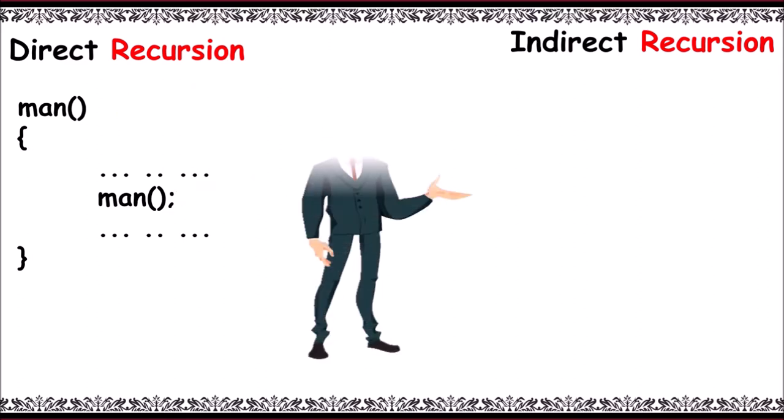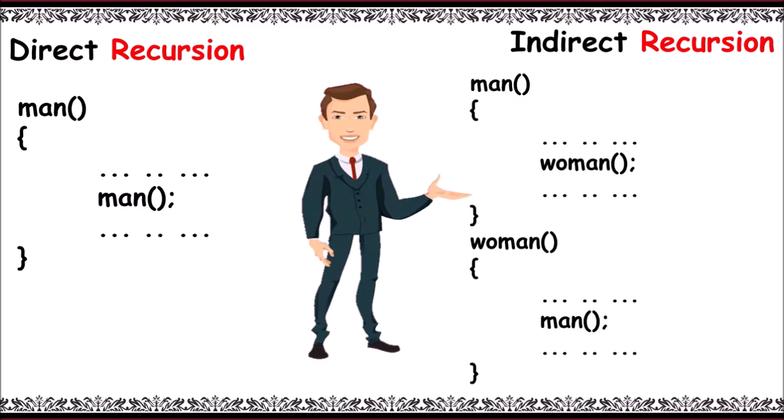And the other one is indirect recursion. We have two functions here, namely man and woman. The man function contains woman function call, and woman function contains man function call. We call it indirect recursion.